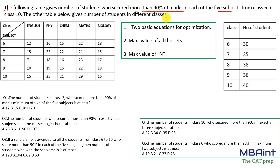We have two tables: one showing the number of students in different classes, and another showing for each subject the number of students scoring more than 90 percent marks. There are three prerequisites for solving this question. The first is that you need to know the two basic equations of optimization — a concept video link is given in the description.